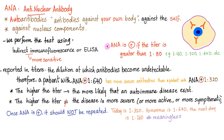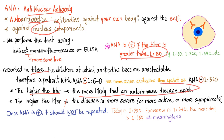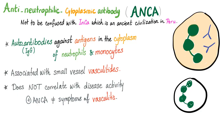Quick review. Anti-nuclear antibodies are antibodies against the nucleus, reported in titers — has to be greater than 1 to 80 to be positive. The higher the titer, the more likely you have an autoimmune disease, but a higher titer does not mean the disease is more severe. ANA antibodies are against the nucleus; ANCA antibodies are against the cytoplasm of neutrophils and monocytes.